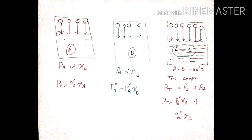This is the first case of Raoult's Law statement. For a solution containing a volatile solute, the total pressure is the sum of PA plus PB. This is the first statement.